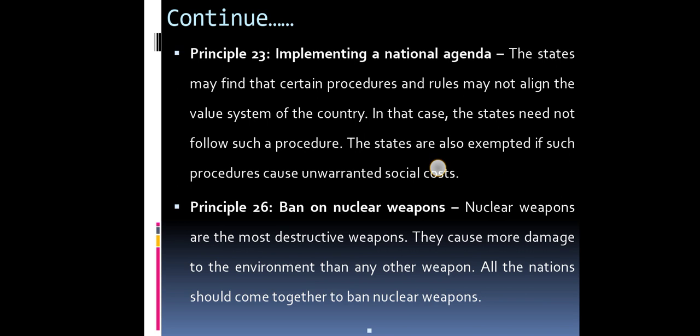Principle 23 — Implementing a national agenda. States may find that certain procedures and rules do not align with the value system of their country. In that case, states need not follow such procedures. States are also exempted if such procedures cause unwarranted social cost. Principle 26 — Ban on nuclear weapons. Nuclear weapons are the most destructive weapons; they cause more damage to the environment than any other weapon. All nations should come together to ban nuclear weapons.